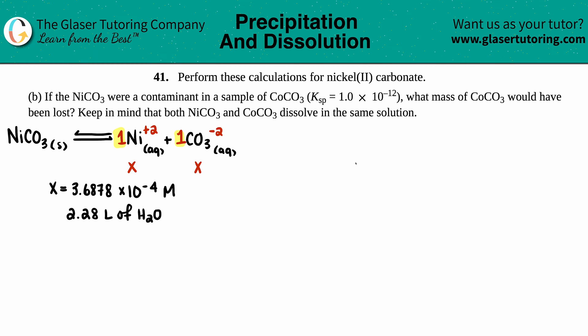Number 41, perform these calculations for nickel(II) carbonate. Letter b says: if the nickel(II) carbonate were a contaminant in a sample of cobalt(II) carbonate (CoCO3), which has a solubility product Ksp of 1.0 times 10 to the negative 12, what mass of the CoCO3 would have been lost? Keep in mind that both NiCO3 and CoCO3 dissolve in the same solution. If you didn't watch letter a, go back and watch it - it will give you a lot of context.